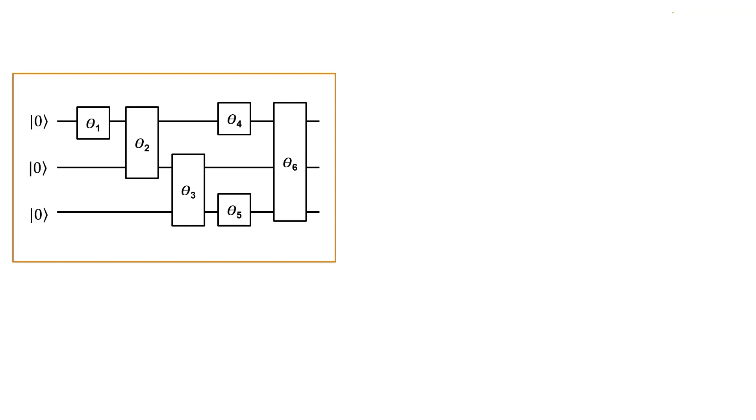The second part is the classical optimization. The tunable parameters of the ansatz and energy eigenvalues of the Hamiltonian are fed into the classical optimizer. The optimizer adjusts the parameters of the quantum circuit to minimize the energy.